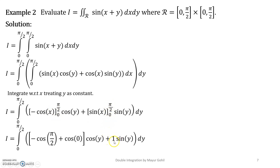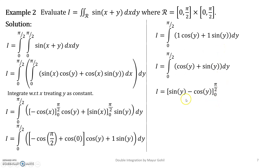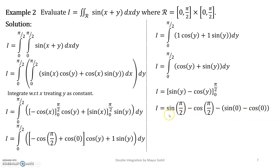After plugging in the limits you get 1 · cos y + 1 · sin y. Your function has been reduced to a single variable. Now perform the single integration — on integration you get sin y − cos y evaluated from 0 to π/2. Substituting: sin(π/2) − cos(π/2) − (sin 0 − cos 0). Substituting the values of sines and cosines gives the answer i = 2.